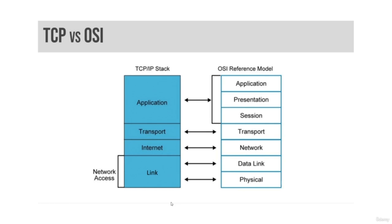The TCP/IP application layer combines the session, presentation, and application layers of the OSI model. Most of these protocols use a client-server architecture where a client connects to a listening server such as SSHD. The clients and servers use either TCP or UDP, or sometimes both, as a transport layer protocol. TCP/IP application layer protocols include Secure Shell, Telnet, FTP, and many others.